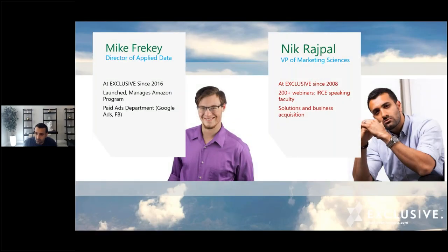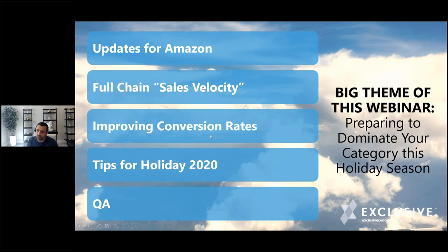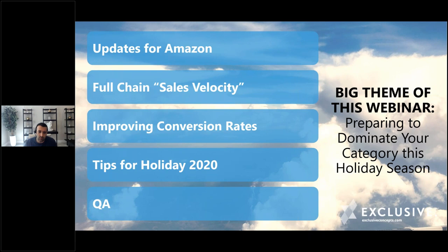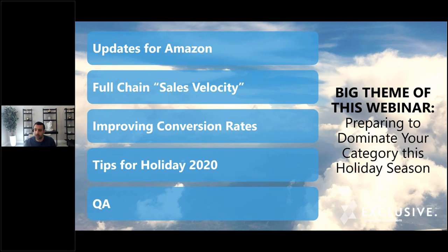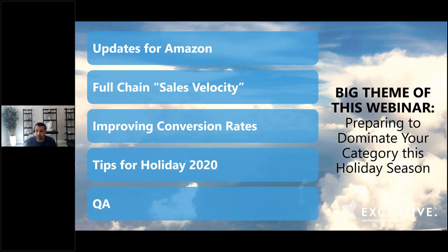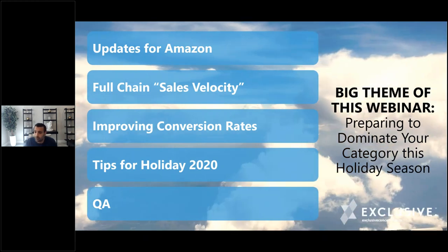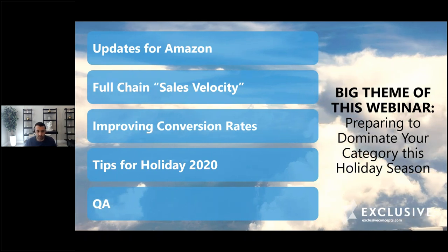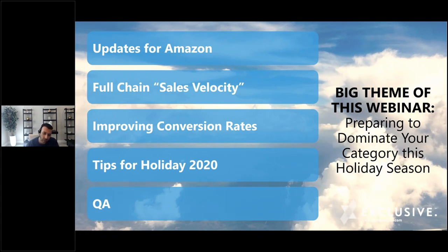We're going to go through a well-organized structure. We'll talk about updates for Amazon first, then what we call full chain sales velocity — basically the mechanics of how Amazon works. If you don't know how Amazon works with its organic ranking, you're missing the whole thing. We'll cover how to improve conversion rates for those who have traffic but wonder why they don't have sales, then some tips for holiday 2020.